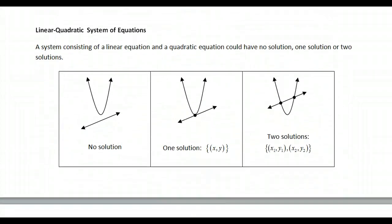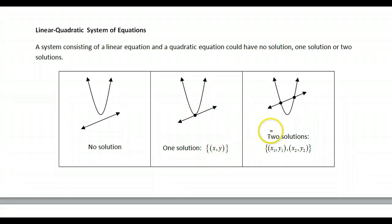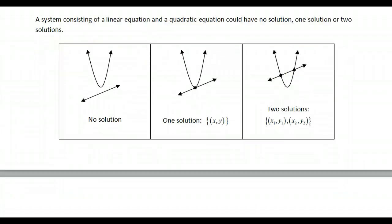Linear-quadratic system: a system consisting of a linear equation (a straight line) and a quadratic equation could have no solution where the line and the parabola do not meet; one solution where they touch at exactly one point, which is the set consisting of one ordered pair (x, y); or two solutions where the line crosses the parabola in two places.